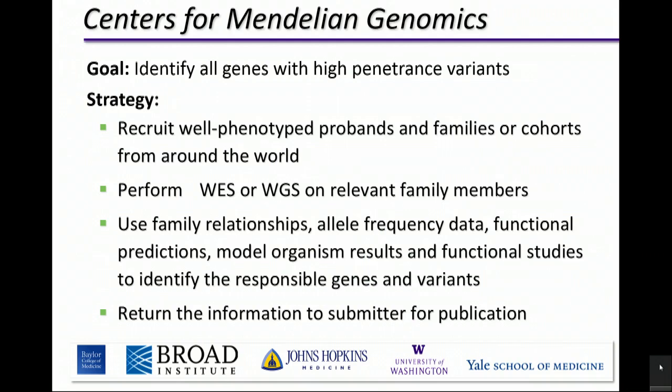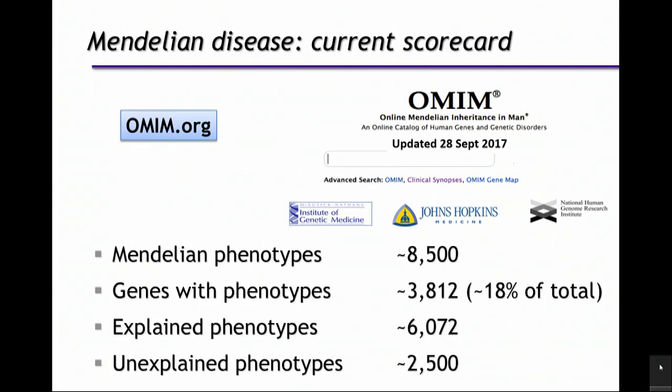These four centers — Yale, UW, Baylor-Hopkins as a team, and more recently Broad — are in their end of fifth year right now. The current scorecard, kept track of in OMIM (Online Mendelian Inheritance in Man), shows about 8,500 Mendelian phenotypes described in the literature. There are 3,812 genes in which variation can cause a recognizable phenotype — that's only 18% of the total, so we have a long way to go. That explains about 6,000 phenotypes, leaving about 2,500 unexplained phenotypes, and currently about 300 new phenotypes come into OMIM every year.